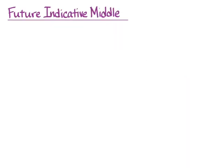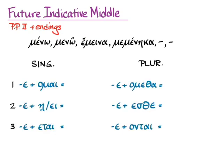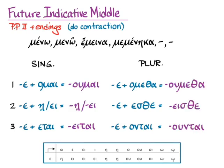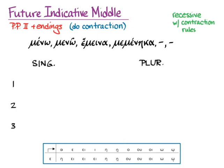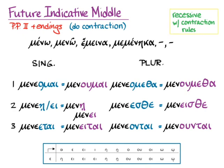Let's move on to the future indicative middle — it's the same process. All the things you already know about epsilon contracts with the first principal part, you're now going to apply to the second principal part. So you take that principal part and add the endings, but you'll have that epsilon to contract them with. You do the contraction and get the endings with the epsilon combined with the vowel at the beginning of each ending. Then you think about the accent, which follows recessive rules with contraction. So with meno, we use the uncontracted stem hiding in the second principal part and add the future indicative middle endings.